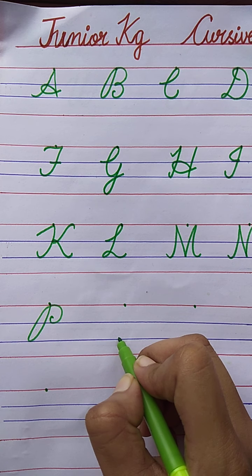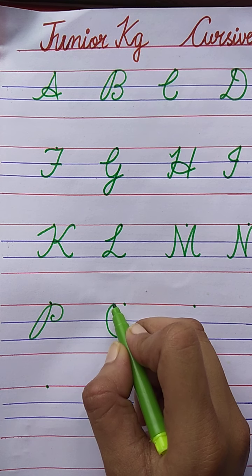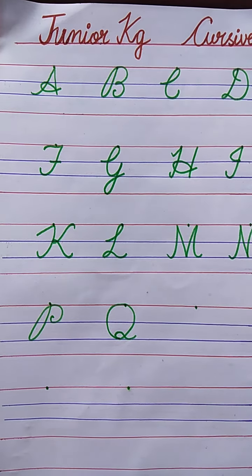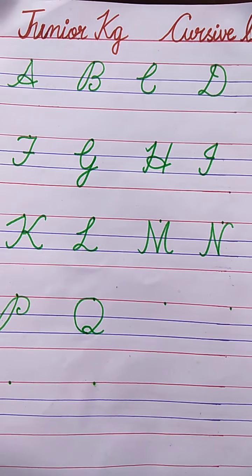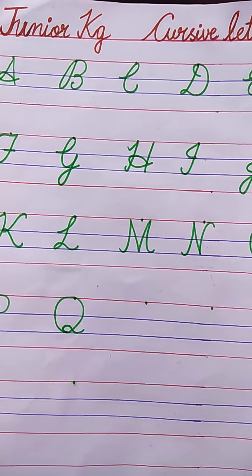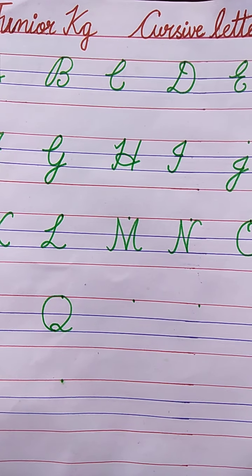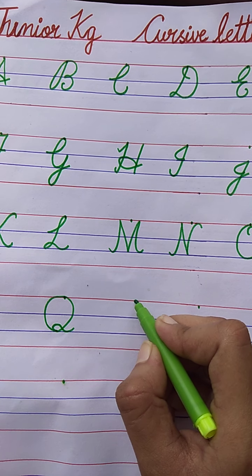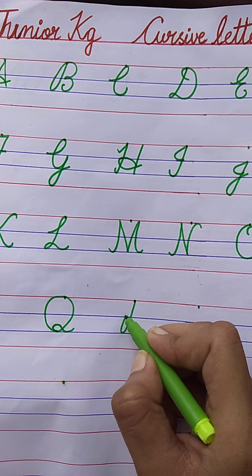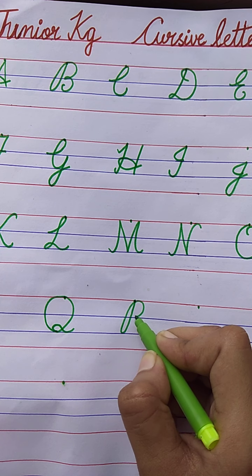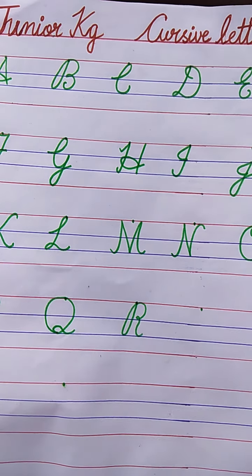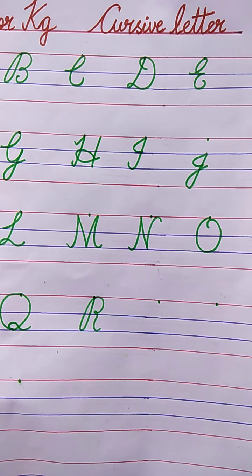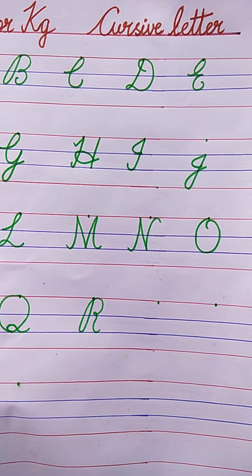Q for Queen. Draw a curve, semi-circle, one more semi-circle, loop, curve line. Q for Queen. The spelling of Queen: Q-U-E-E-N. Now the next letter is R. Very good. R for Rabbit. Slanting line, one more slanting line, semi-circle, loop, curve line. R for Rabbit. The spelling of Rabbit: R-A-B-B-I-T.